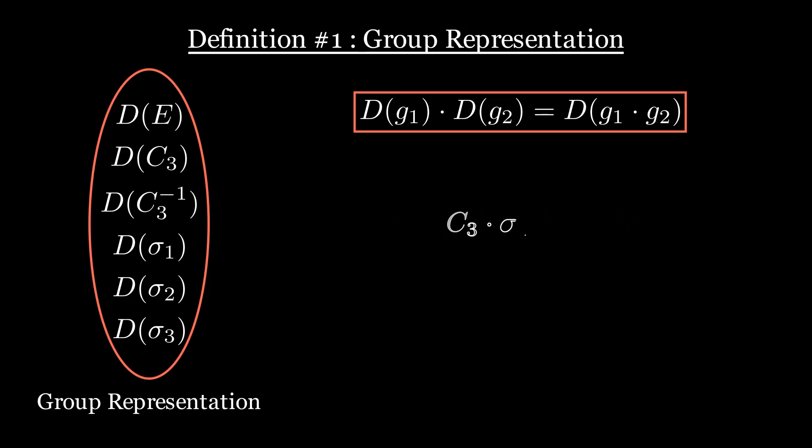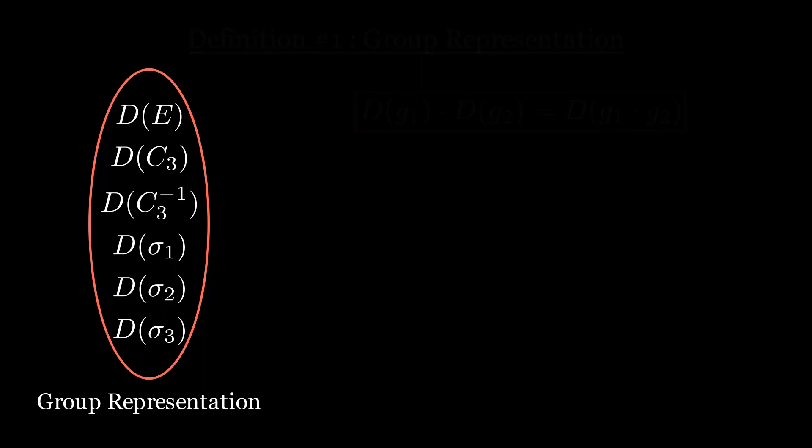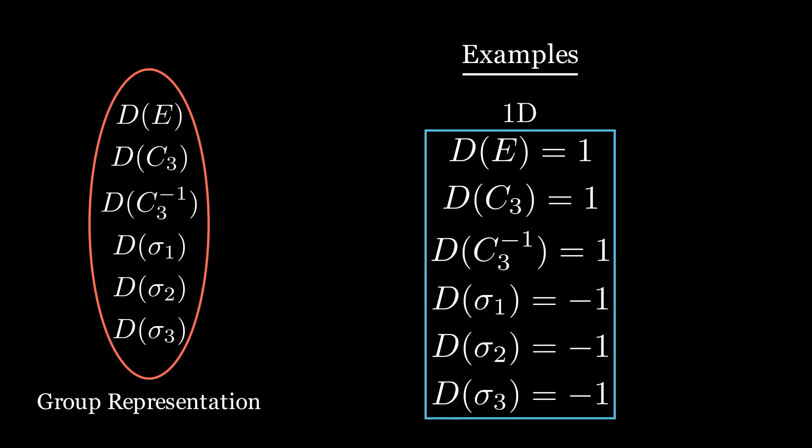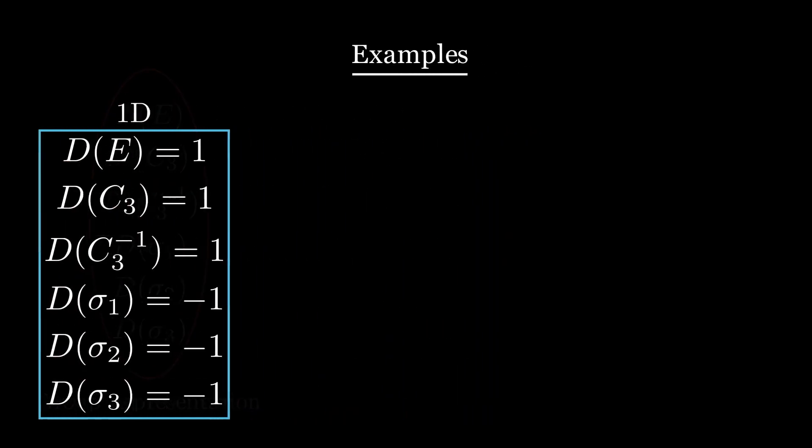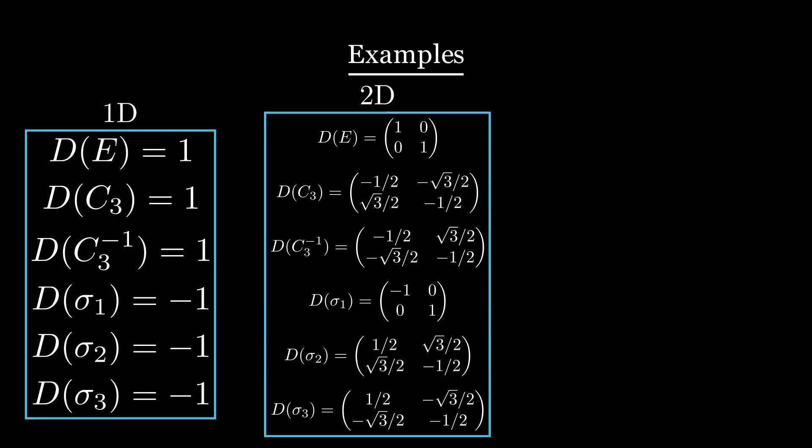For example, since we set sigma1 times c3 equals sigma2, the matrix of sigma1 times the matrix of c3 should be equal to the matrix of sigma2. And this should be true for all products of our group. There can exist infinitely many different representations of a given group, but let's look at some examples for our c3v group. First, we have a simple 1D representation, where each rotation is assigned 1 and each reflection is assigned minus 1. Then, we have a 2D representation, where the matrices are the rotation and reflection matrices in 2 dimensions. For both representations, you can check that they indeed obey to the multiplication table I gave you before.